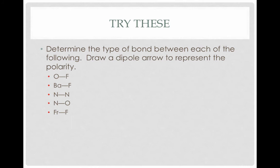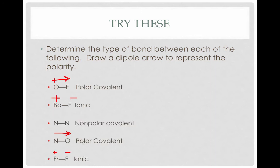Below you'll see a list of bonds. Take a moment to determine what type of bond each one is—ionic, covalent, and if covalent, nonpolar or polar. You don't have to use specific electronegativity values; just determine generally whether the difference is large or small. If the bond is polar, draw a dipole arrow representing that polarity. OF and NO both get dipole arrows pointing toward the more electronegative element. The BF bond and the FRF bond are both ionic, labeled with positive and negative ions. The MN bond is nonpolar covalent, so it gets no dipole arrow.